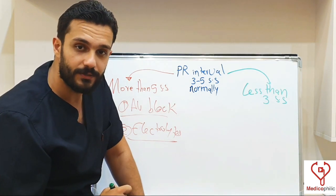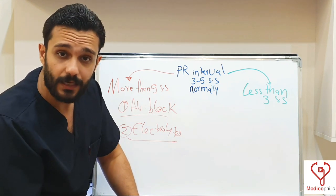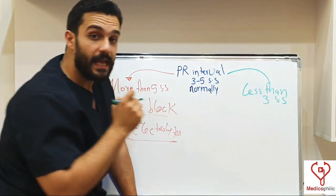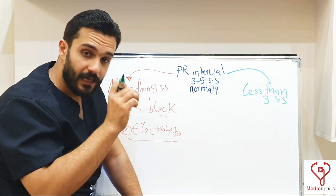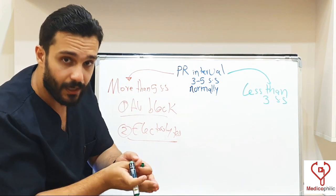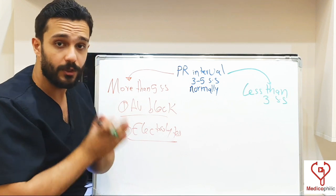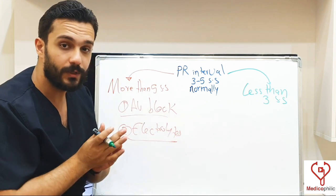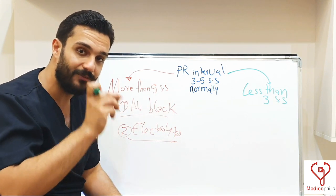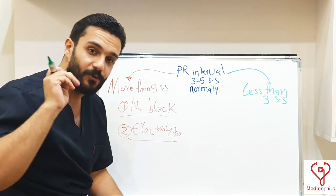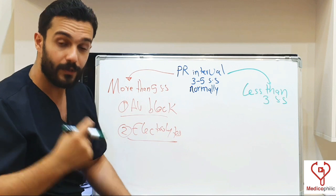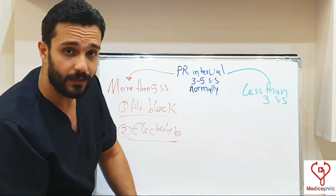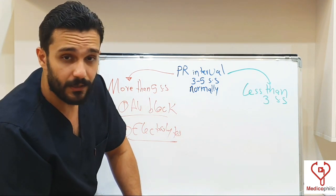Coming to the shortening of PR interval. As we said, the PR interval reflects the conduction of the signal from the SA node to the ventricles. So if there was an accessory pathway in the AV node that makes the signaling pass faster than the normal AV node, this will cause shortening of the PR interval. This is called pre-excitation rhythm, or junctional rhythm, or nodal rhythm. One of the common examples of this rhythm is Wolff-Parkinson-White syndrome.